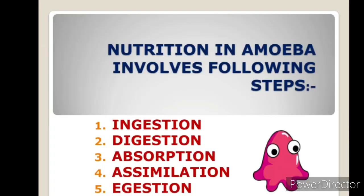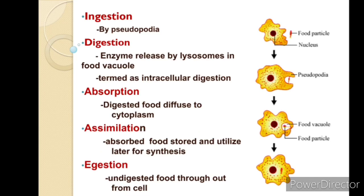Nutrition in amoeba involves the same five steps as other organisms: ingestion, digestion, absorption, assimilation, and ejection. For ingestion — amoeba uses pseudopodia to take food inside its body. Amoeba surrounds the food particles with the help of pseudopodia and engulfs them into its body.